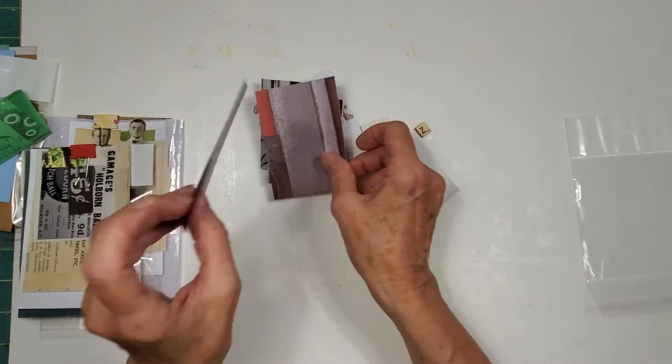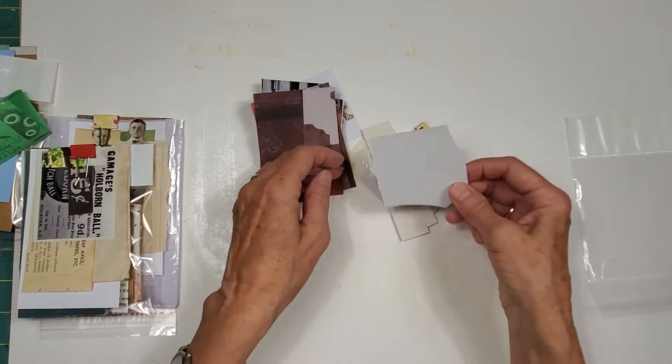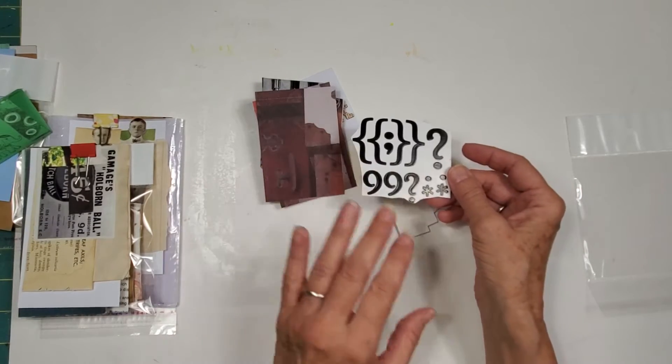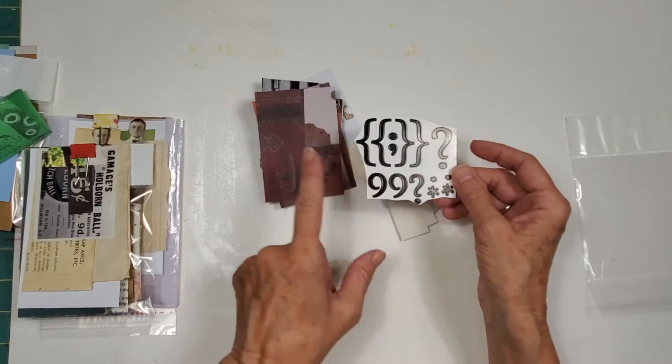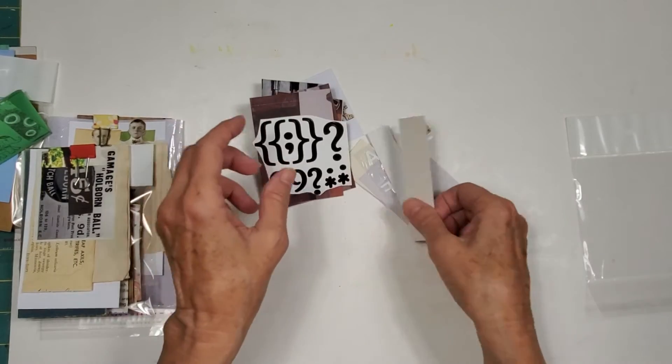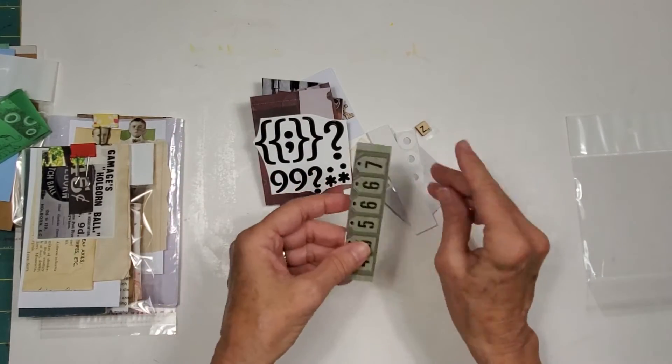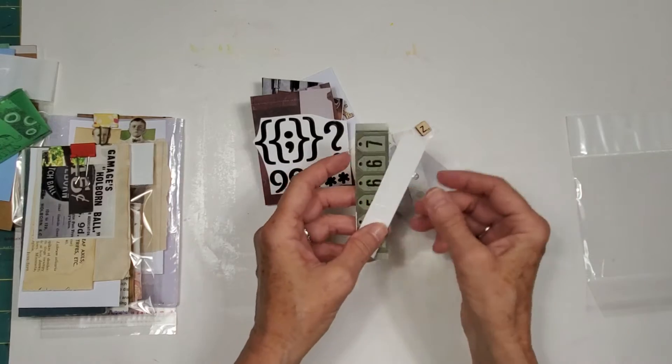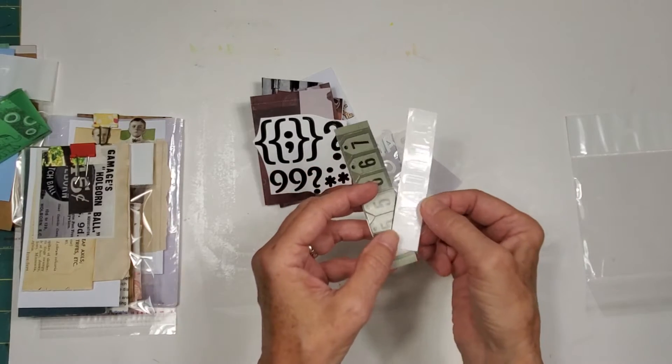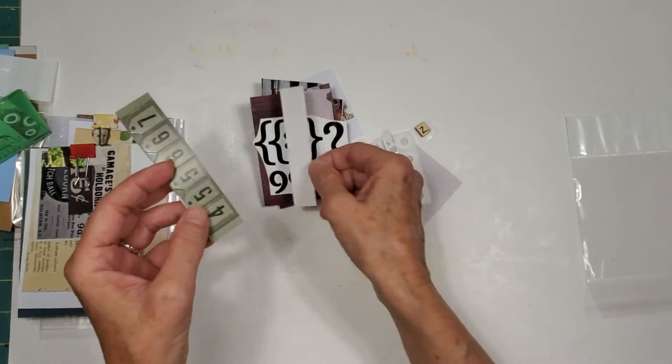You got an art trading card, two art trading card blanks, more ABC one, two, three letters, numbers, question marks, ampersands over here. So all kinds of fun things to play with. These are translucent ABCs right here.